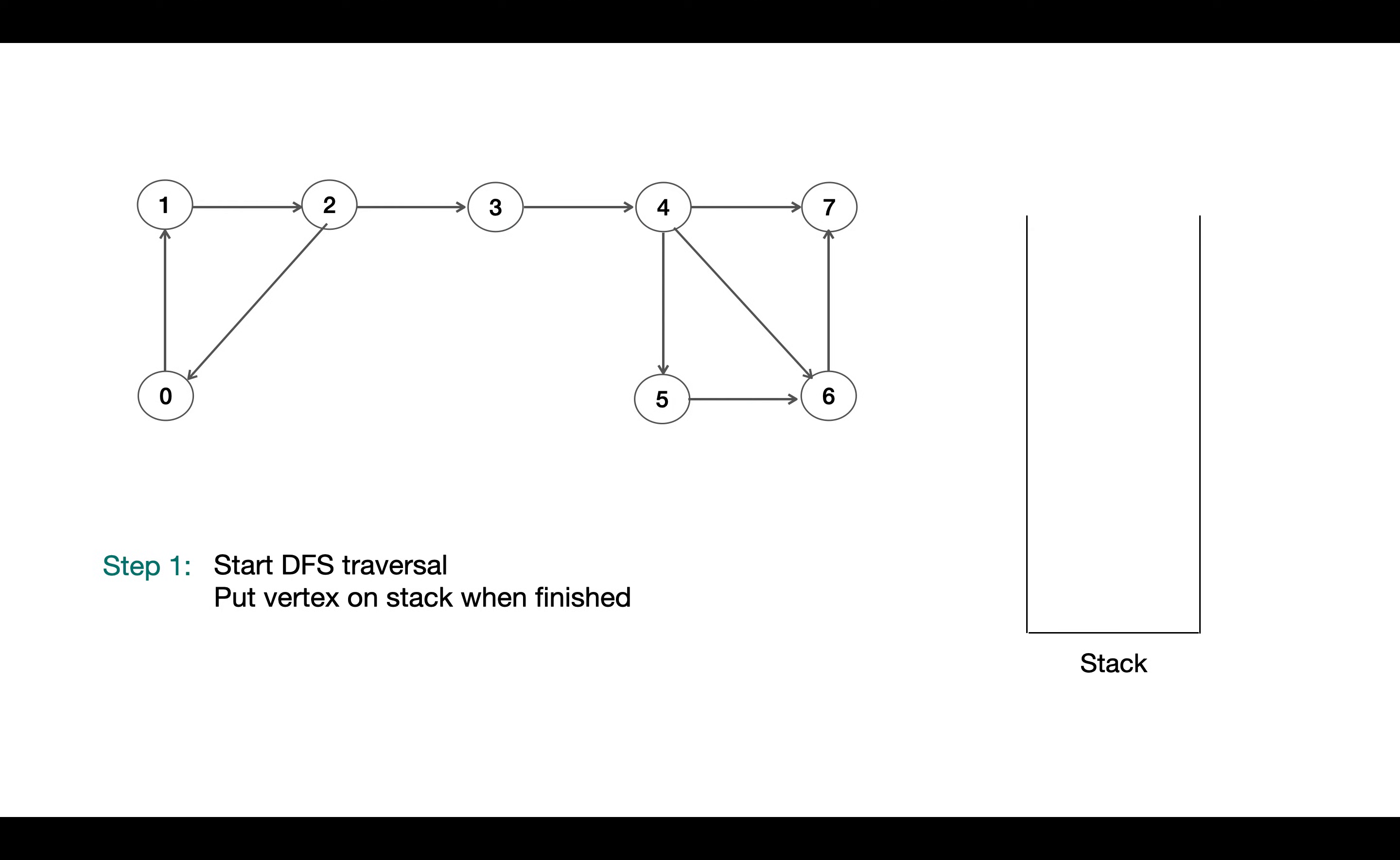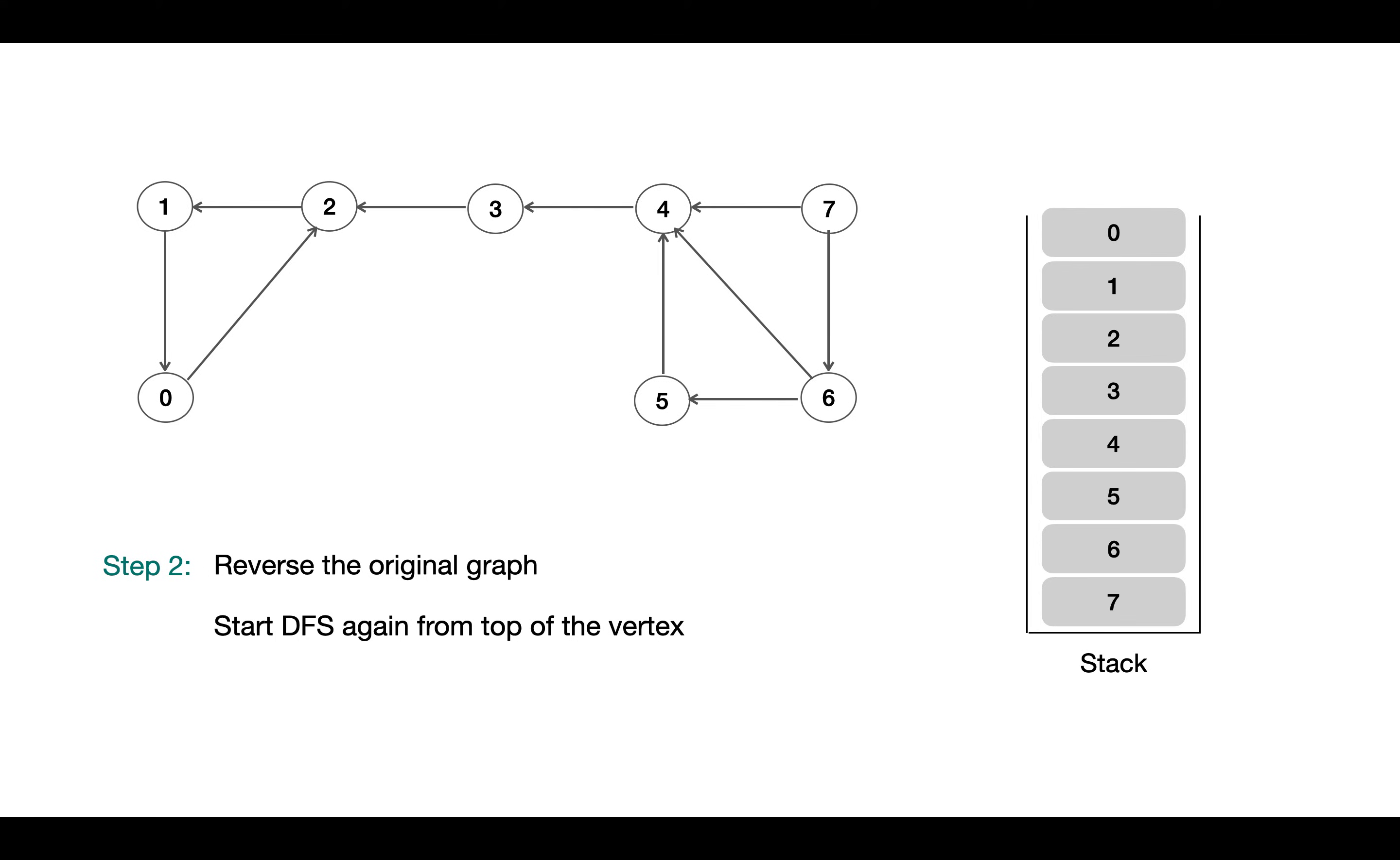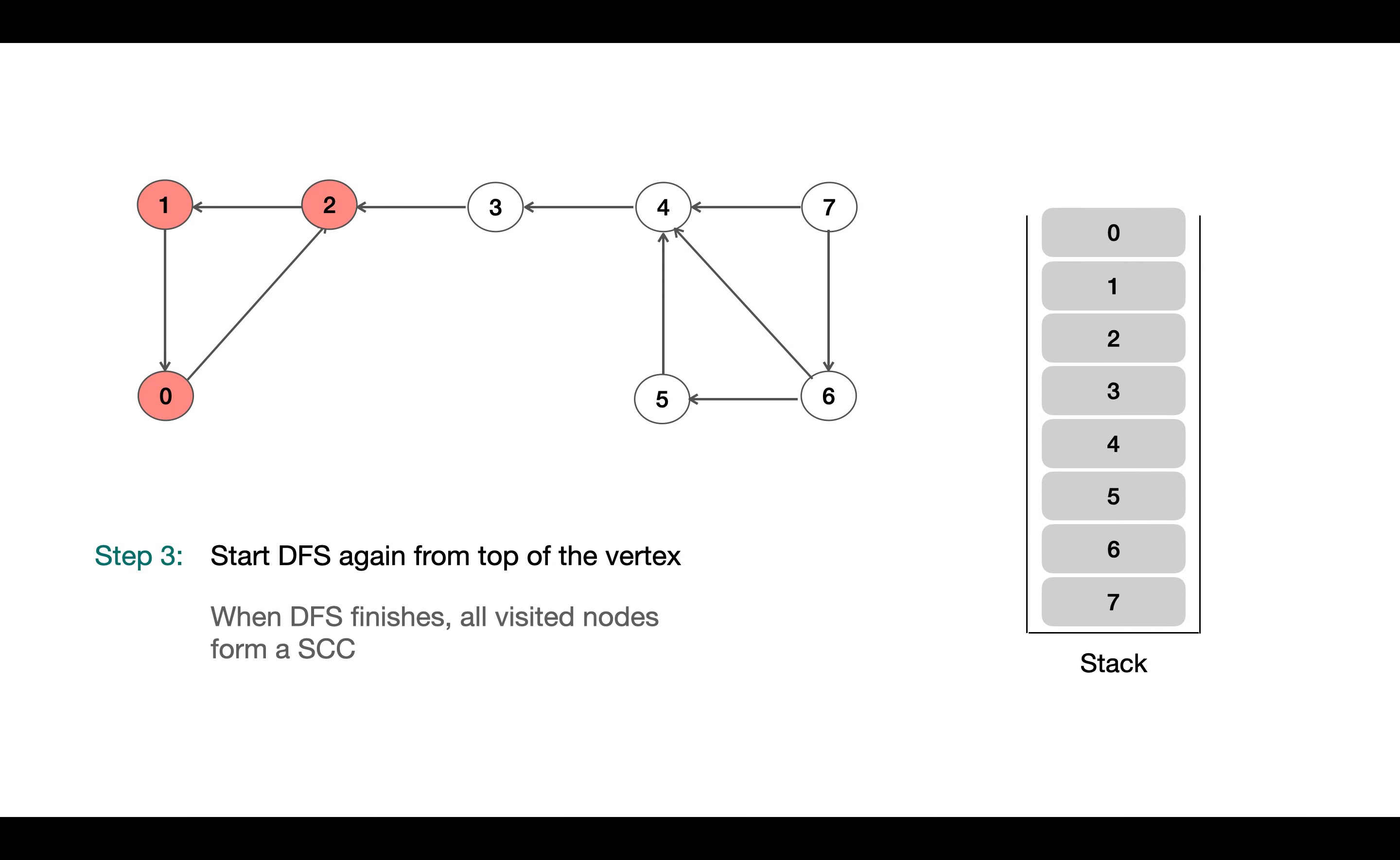Summing up Kosaraju's algorithm consists of three steps. Step one: perform DFS traversal of the graph and push nodes to the stack when it gets finished. Step two: reverse the original graph by reversing direction of all the edges. And then step three comes to again performing DFS traversal starting from the top of the vertex of the stack. When DFS gets finished, the visited nodes form a strongly connected component. So after DFS gets finished, if still there are nodes in the stack, we pop those nodes until an unvisited node is found.